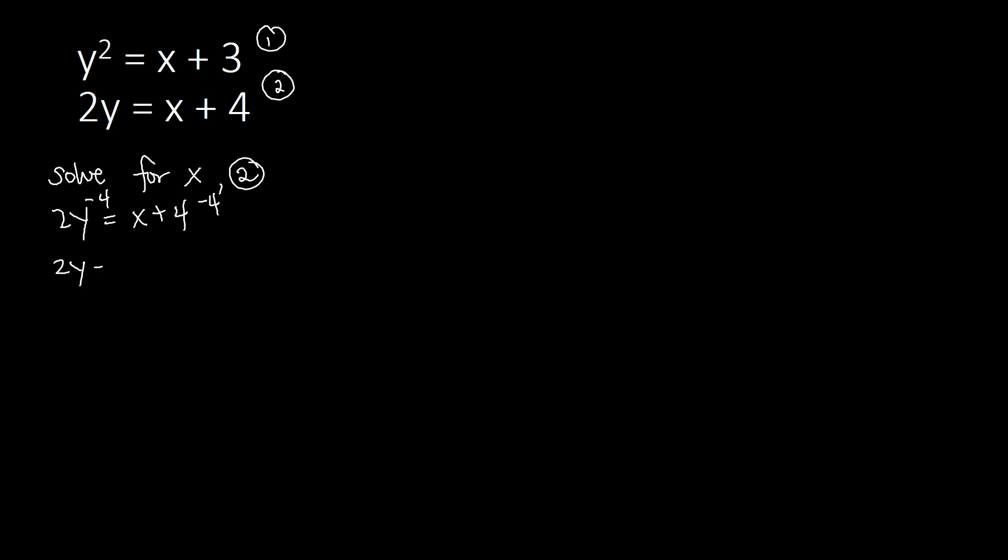2y minus 4 is equal to x. Or you can simply swap the places because I know you are more comfortable with having our variable that we have solved on the left side isolated. So we have x equal to 2y minus 4. This will be our third equation.